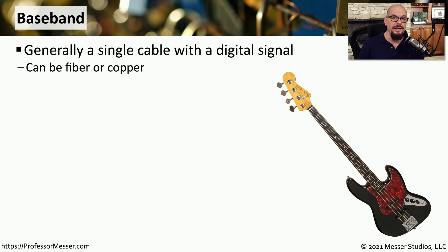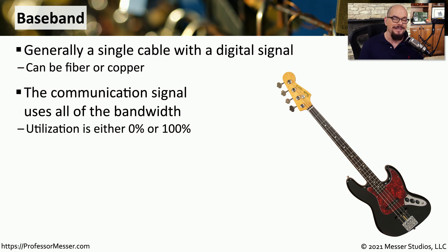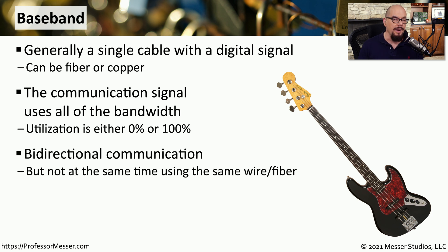If broadband uses a large number of frequencies to communicate, then baseband uses a single frequency. This is very often done over a single cable or single fiber connection and typically uses digital communication. Since there is a single frequency being used, anything going over this link will use all of the bandwidth on that connection. Baseband can support bidirectional communication, although traffic usually goes one way at a time over a particular fiber or copper connection.